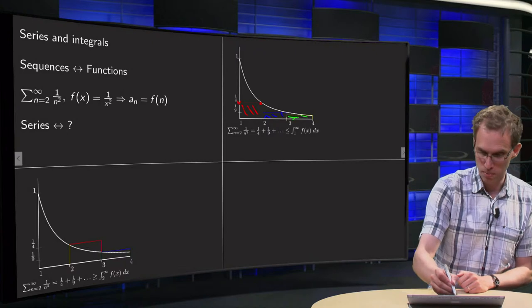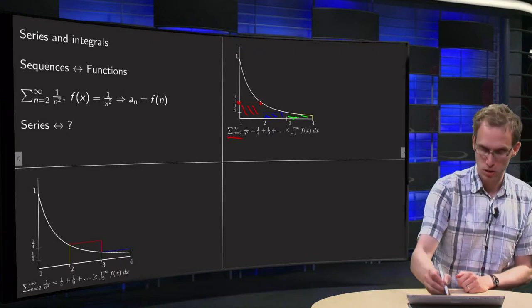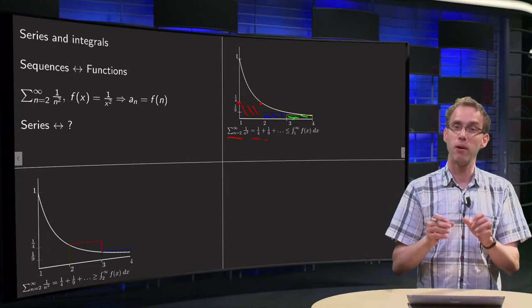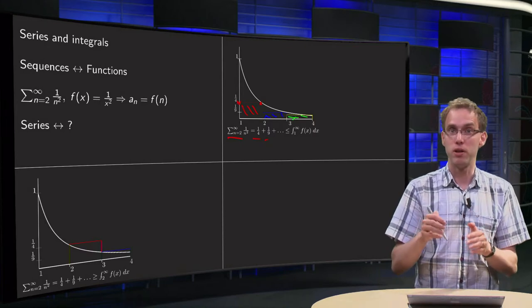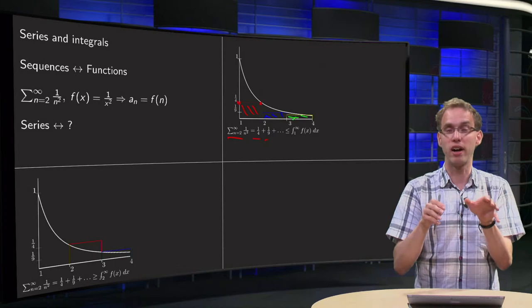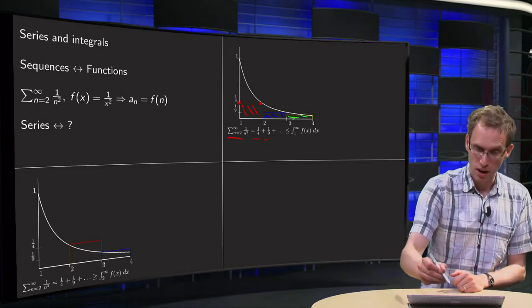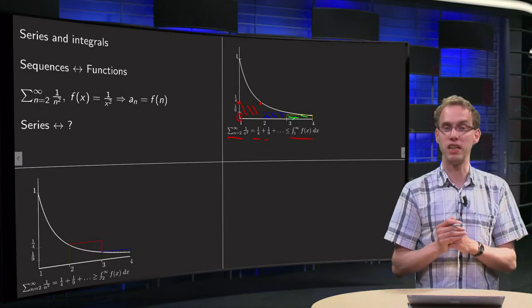And then I see that my sum starting at n equals 2, so 1 over 4 plus 1 over 9 plus 1 over 16, etc. Now all those boxes are below my curve, so now the total area of the boxes is smaller than the area below the curve, and the area below the curve, we start now at 1 equals the integral from 1 to infinity f(x) dx.